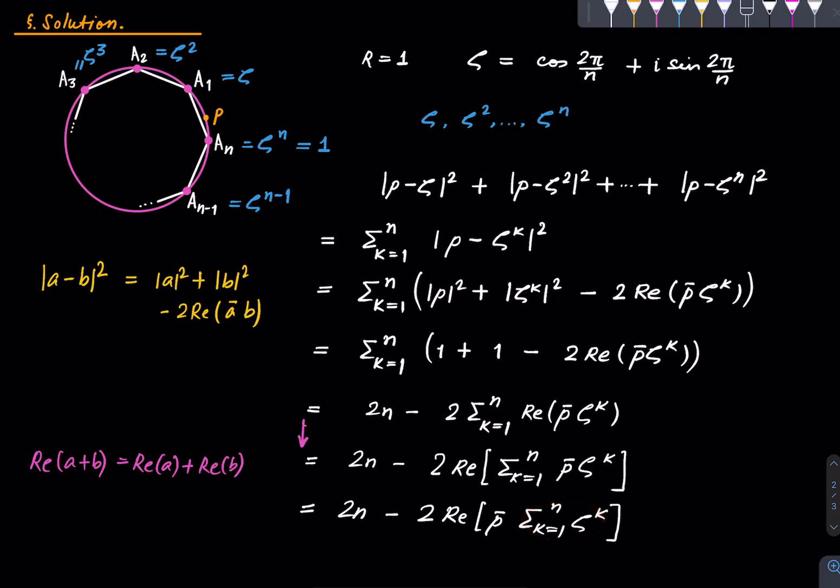Now what you can do is this is basically the sum of all the nth roots of unity and therefore this is 0. Or you could use the geometric formula. If you use the formula for the geometric series, this is P̅ times [ζ(ζⁿ - 1)/(ζ - 1)]. I use the formula for geometric series, but since ζⁿ is equal to 1, this becomes 0 and therefore this whole thing is 0.